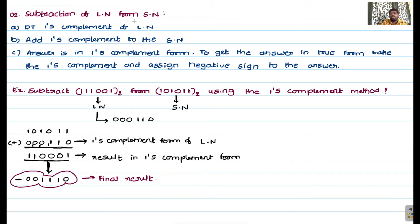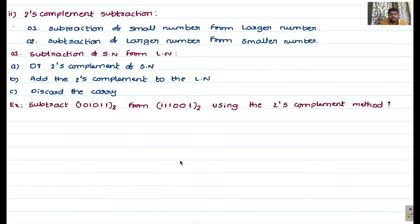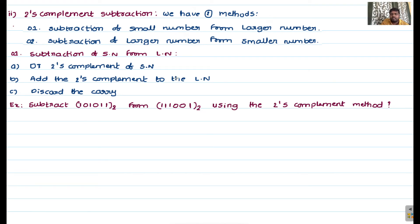The same approach applies to two's complement subtraction. We also have two methods: subtraction of smaller number from larger number, and subtraction of larger number from smaller number. For subtraction of smaller from larger, the first step is to determine the two's complement of the smaller number. The second step is to add the two's complement to the larger number. If a carry is generated, simply ignore it.